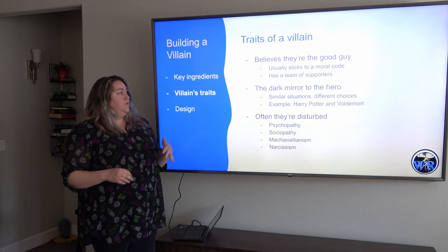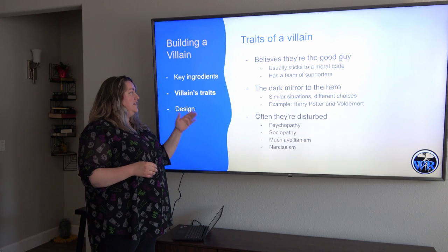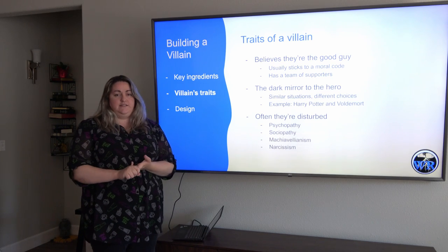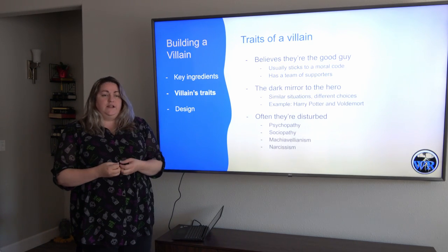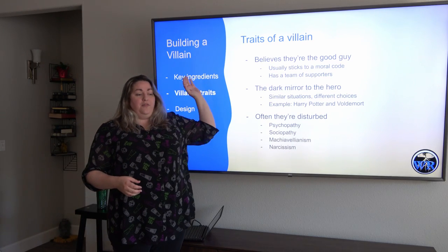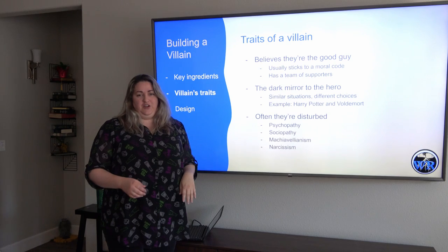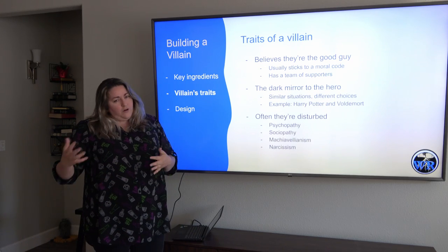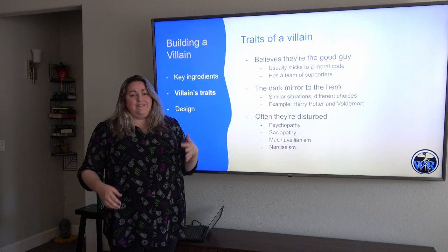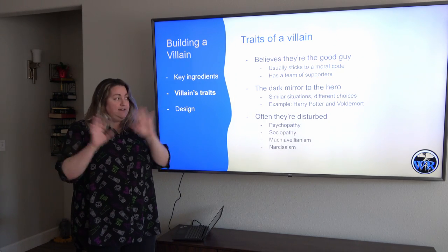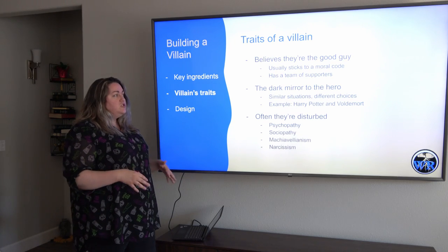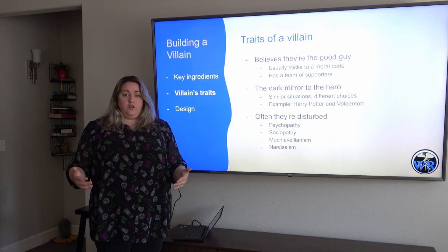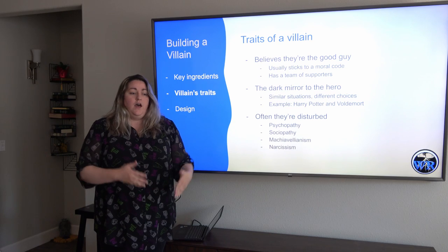Now let's look at the traits of a villain. You've looked at the key ingredients — realistic motivation, realistic backstory, and being tied to the hero. Now the individual traits. First of all, they absolutely believe that they're the good guy. They believe they are doing the right thing and are on the side of good. Or at least they have a moral code they stick to — it could be their own moral code, but there's usually some kind of code they live by that helps them feel like they're the good guy. There are obvious exceptions: the Joker doesn't really have a moral code, but he's chaotic.